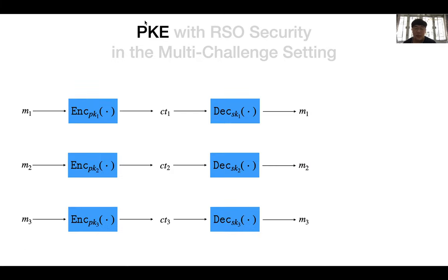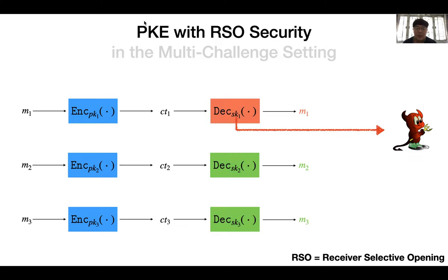In practice, a public key encryption scheme is usually deployed in a multi-user setting. That is, there are many users with different public keys and secret keys, and a sender sends a message to a receiver by encrypting the message under the receiver's public key. In this case, it is common that some receivers may be corrupted and their secret keys will be revealed to an adversary. It seems infeasible to protect messages sent to the corrupted receivers, but we still hope to protect those messages sent to the uncorrupted users. A PKE scheme that can provide such a security guarantee is said to have Receiver Selective Opening Security, or RSO Security for short.